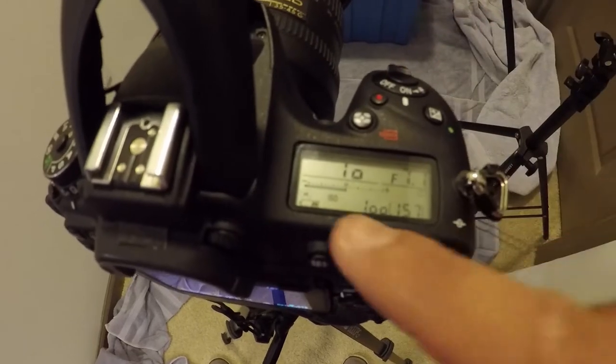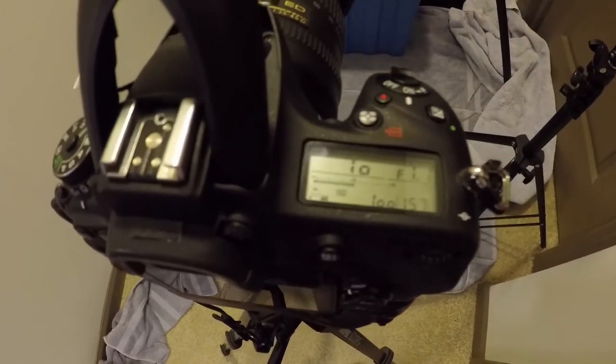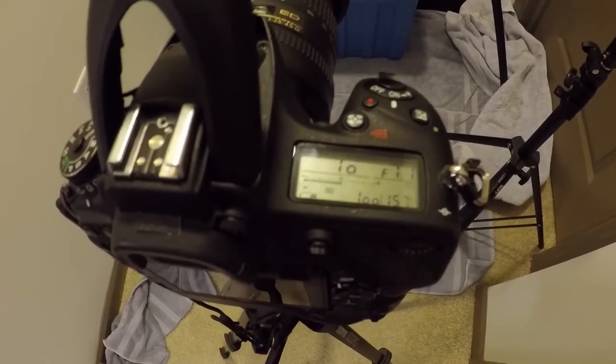So what we're working with here is one-tenth of a second shutter speed at f7.1. That's just to make sure everything's in focus and a low ISO, ISO 100.